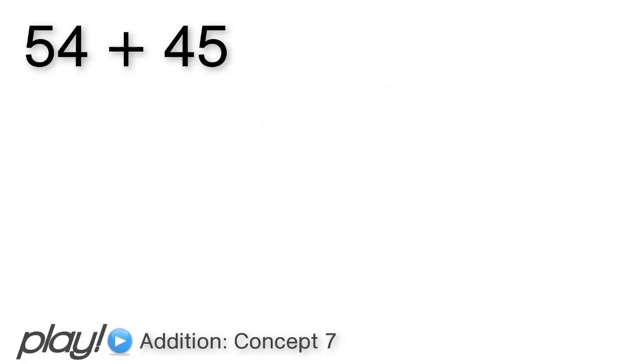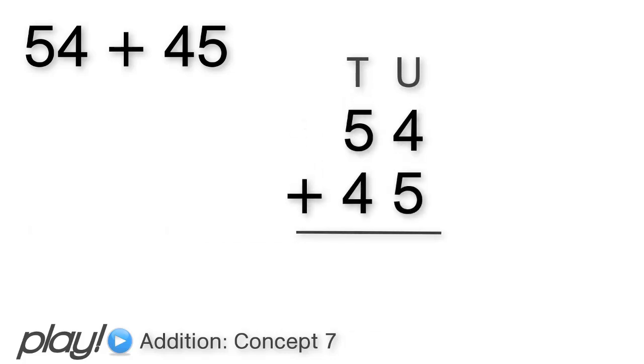Using the short method, we write two numbers underneath one another in place value columns. We add up starting with the units. 5 units plus 4 units gives 9 units. 4 tens plus 5 tens gives 9 tens, to give the same answer as before of 99.